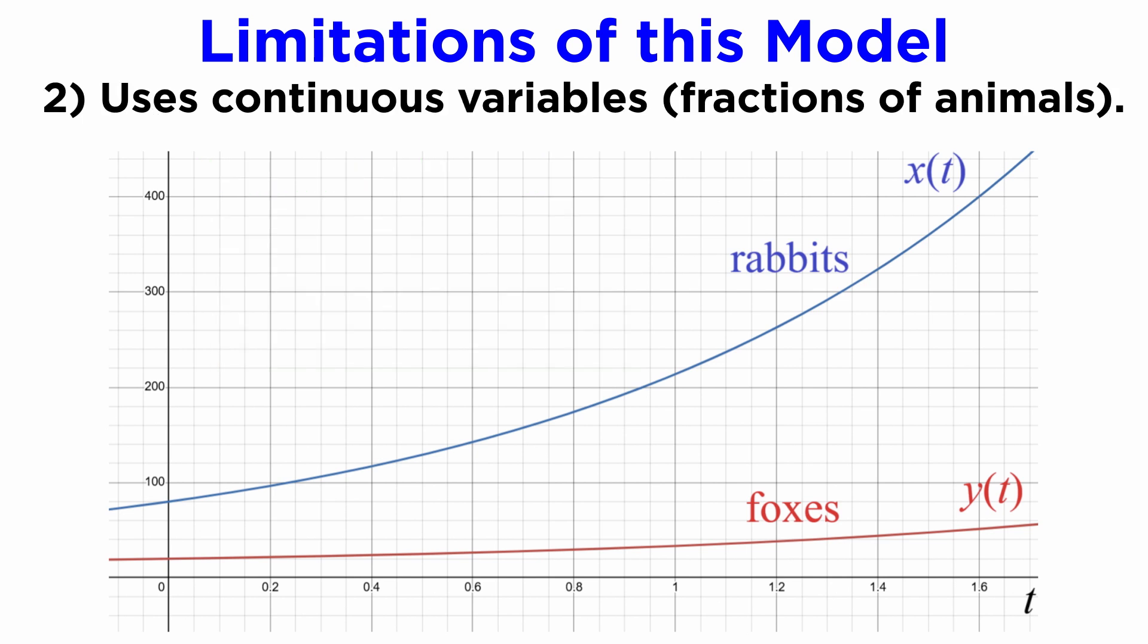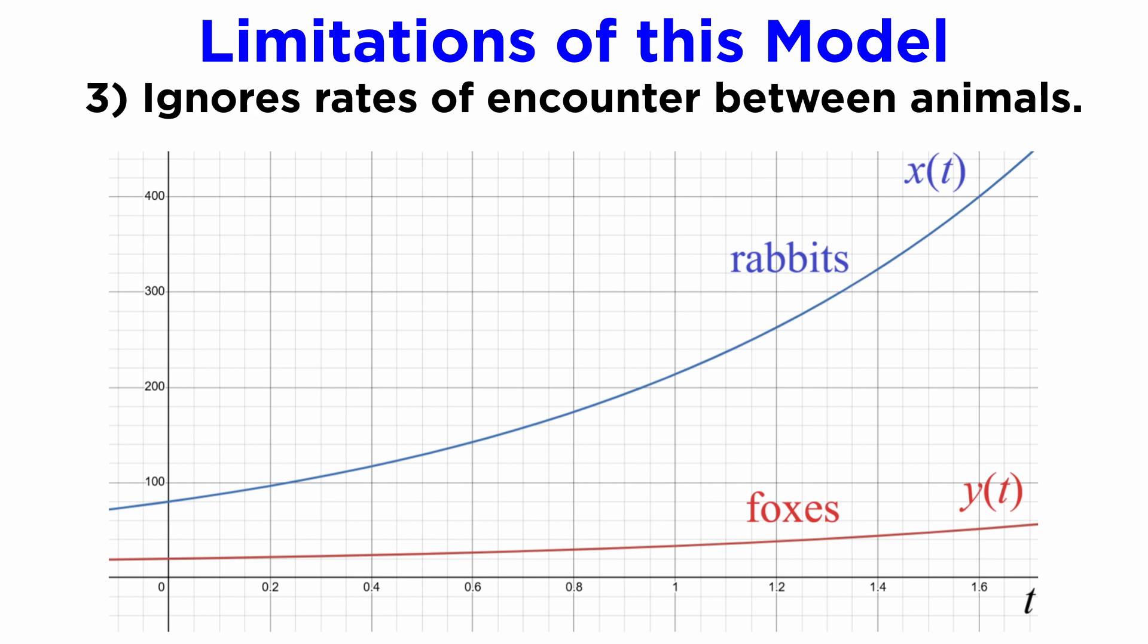It also uses continuous variables, as if it's possible to have fractions of the animals, which is obviously not the case, and results in this model being unable to predict extinctions of animals. The model also doesn't consider the rates of encounter between foxes and rabbits such that predation can occur at the specified rate.